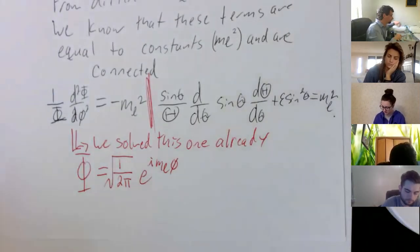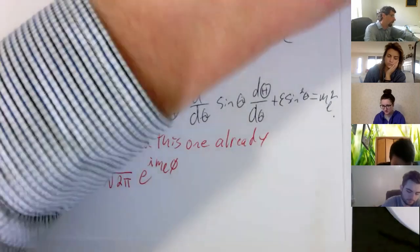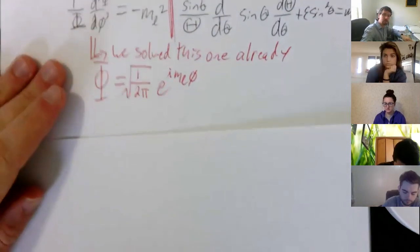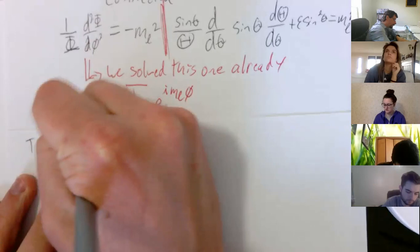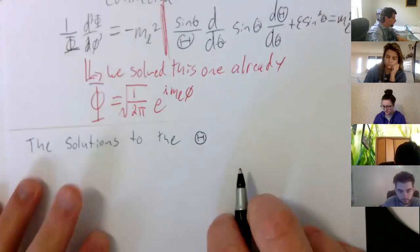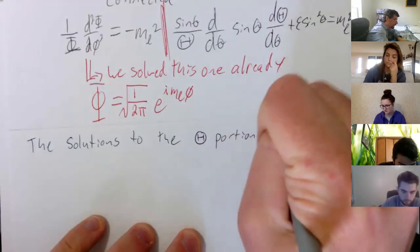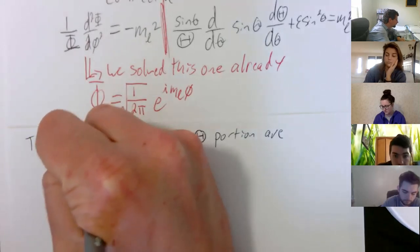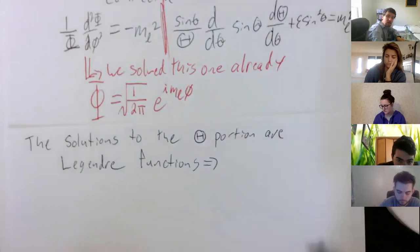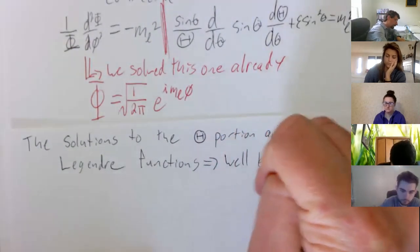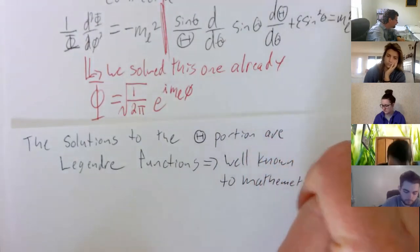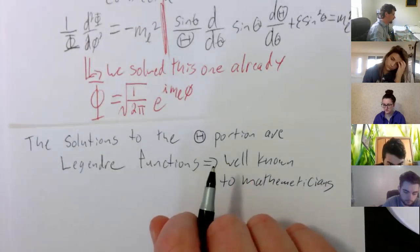Now we've got to deal with the big ugly theta equation. There's a benefit to having this complicated function—the solutions to get that capital Theta portion are known as Legendre functions. These are well-known functions to mathematicians, though probably not to most chemists.